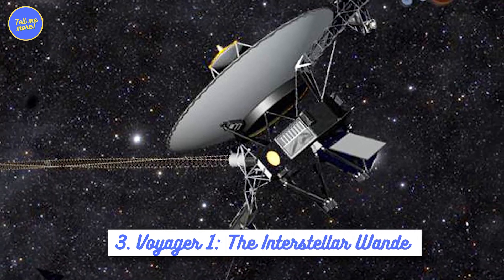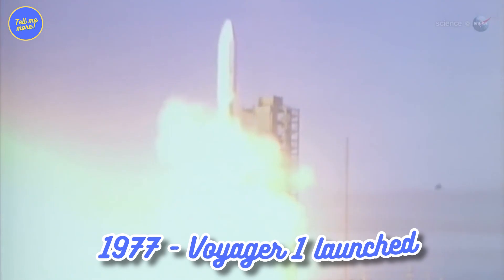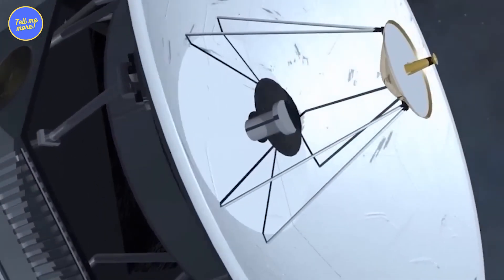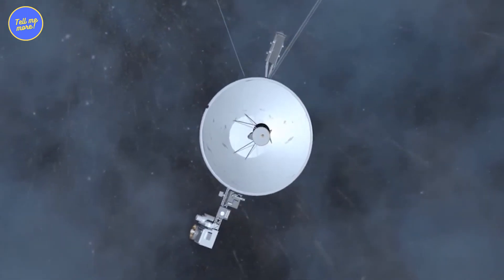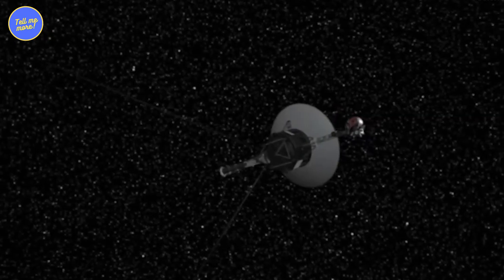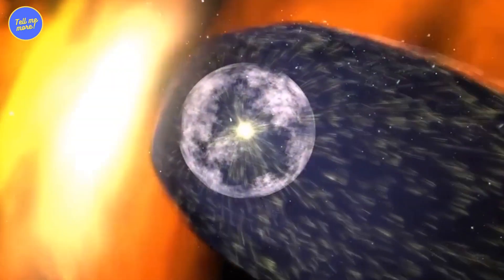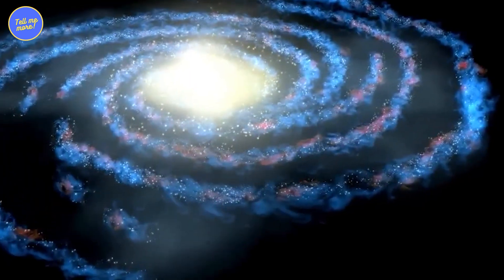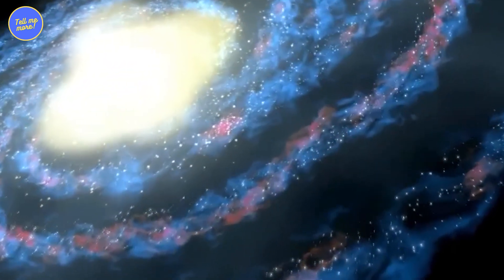3. Voyager 1, The Interstellar Wanderer. Let's take a trip down memory lane to 1977. That's when Voyager 1 was launched into the great unknown. Its mission? Explore the outer planets, and then, like a rebellious teenager, leave our solar system. And you know what? In 2012, Voyager 1 did just that. It crossed the boundary known as the heliopause and entered interstellar space. It's like the spacecraft packed its bags and waved goodbye to our solar system's cozy embrace.